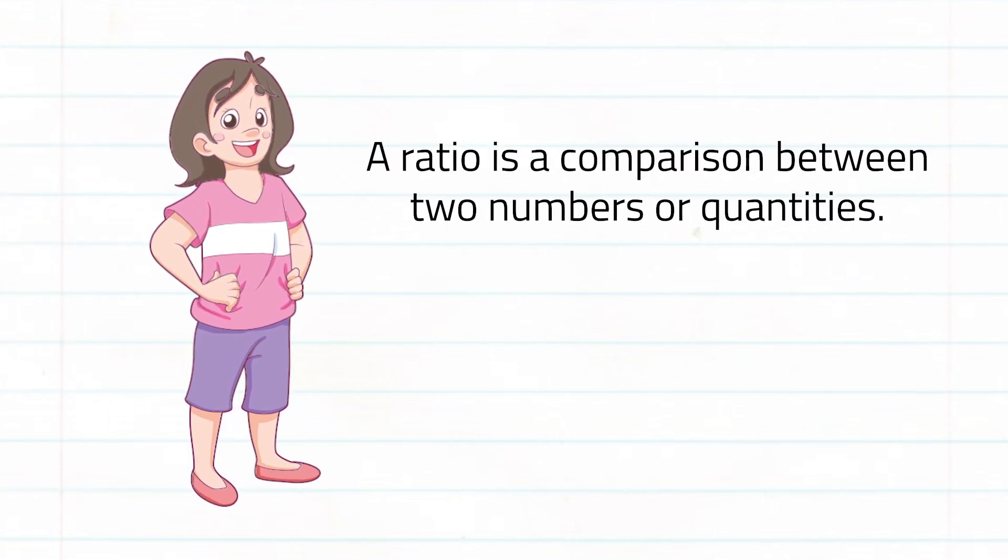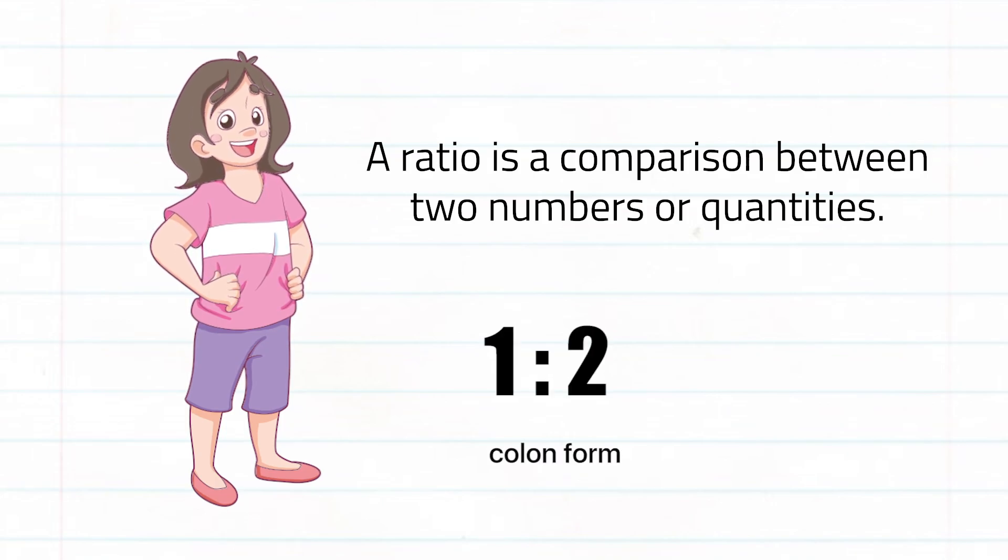A ratio is a comparison between two numbers or quantities. It can be written in column form and fraction form.